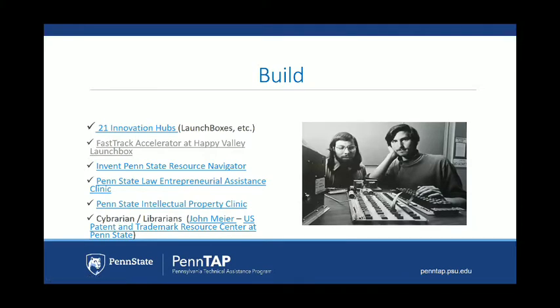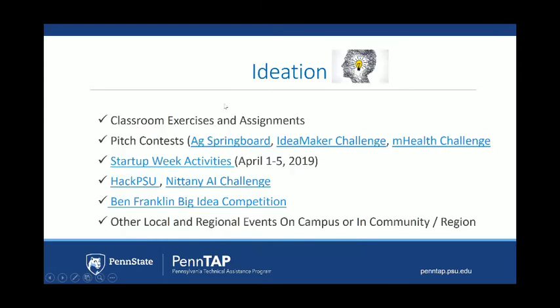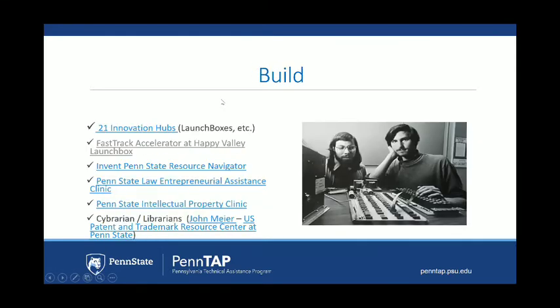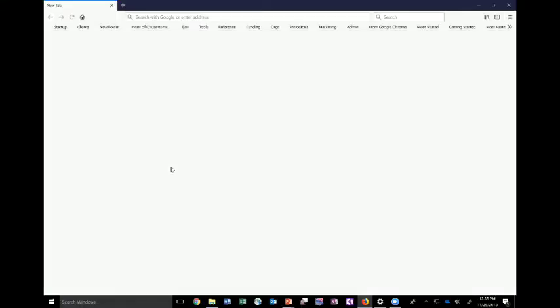Now we're ready to form a company based on the idea we've come up with. The 21 innovation hubs are there to help — they can help you with the paperwork, understanding where to find resources, and how to find potential employees. The fast track accelerator at the Happy Valley launch box is definitely in the build phase. The resource navigator is probably one of the most important sites — if you're looking for resources in innovation and entrepreneurship in Pennsylvania, this has to be on your list. You can filter by region and type of resource, such as accelerator programs, intellectual property assistance, or maker spaces, and it will bring up the resources in that area.